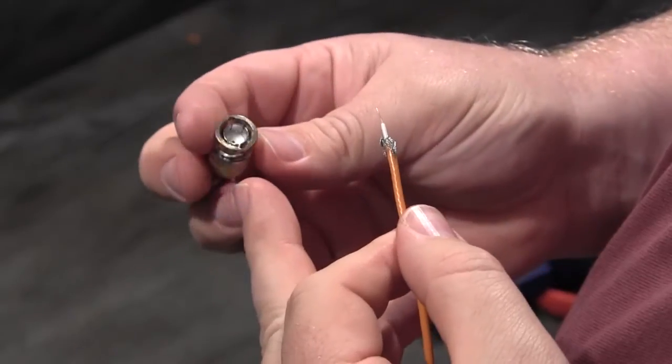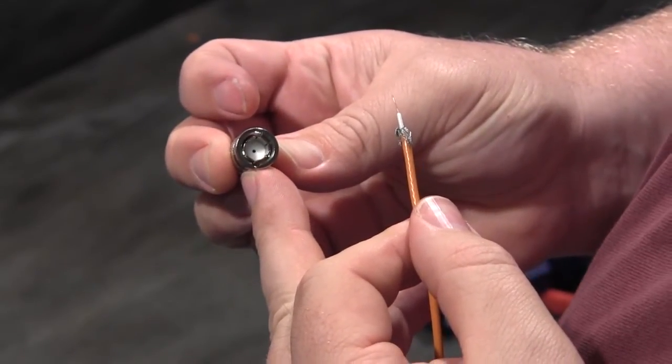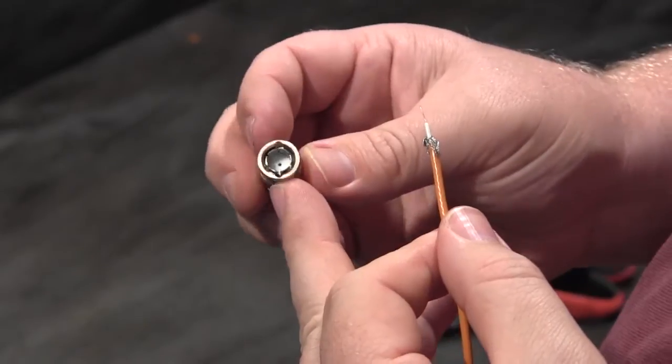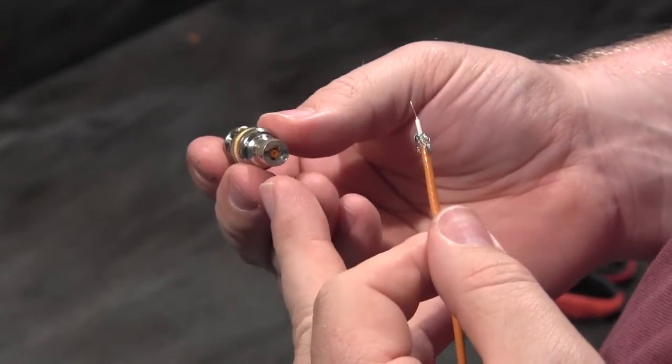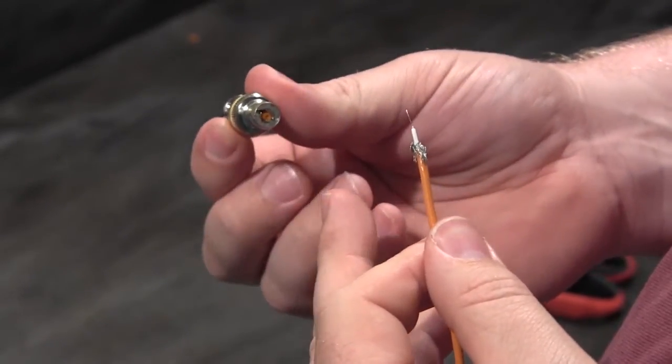You'll notice that at the front of the connector, no pin is visible. As it is with a one-piece connector, all of the components, the pin, the crimping ferrule, the cable, and the body are all built into one.